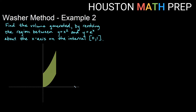In this example we have a region between y equals x squared and y equals e to the x. The lower curve is y equals x squared, which goes through the origin, and the upper curve with a y-intercept of 1 is y equals e to the x.